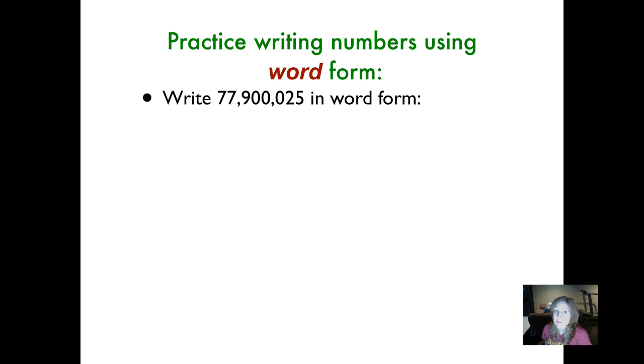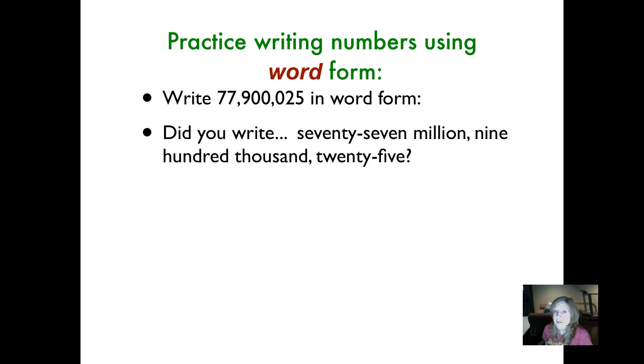Write the number 77,900,025 in word form. When you've finished writing it, start the video again. Did you write 77,900,025? Did you put hyphens between your numbers 75 and 25? That's important. Let's try another one.